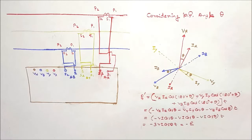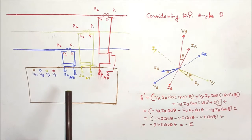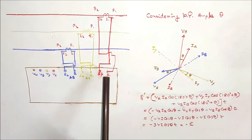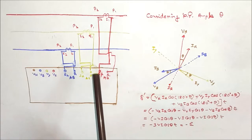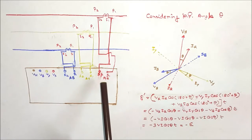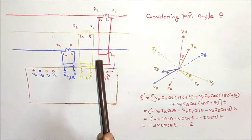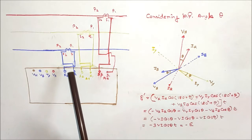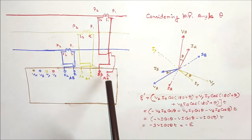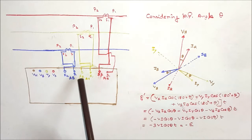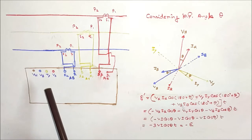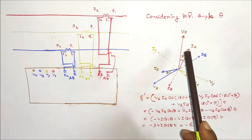Now consider the case where the CT polarity of all CTs has been reversed and what will be the impact on the energy meter reading. For red, yellow, and blue phase, the S1 terminals of the CT secondary are connected to the S2 terminals of the energy meter coils respectively, and the S2 terminals of the CT secondary are connected to the S1 terminals of the energy meter coils respectively.